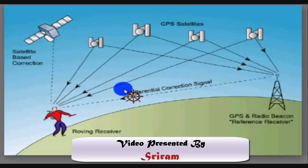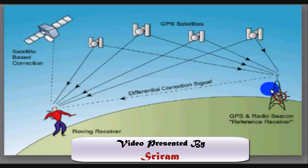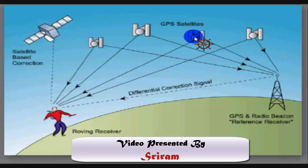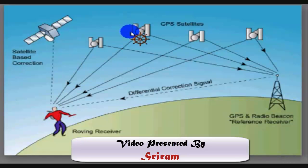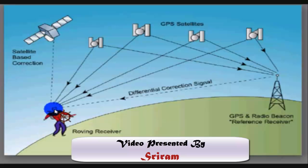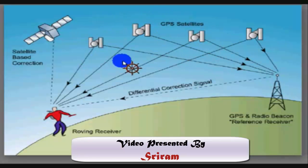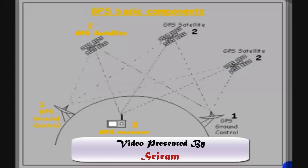The ground station communicates with my receiver and calculates how far I am from the ground station. This distance is transferred to the satellite. My receiver also communicates with each and every satellite visible in the sky, and the distance from me to each satellite is transferred to the satellite as well. By comparing the distance from the receiver to the satellite and the distance from the receiver to the ground station, my exact location on Earth is determined.